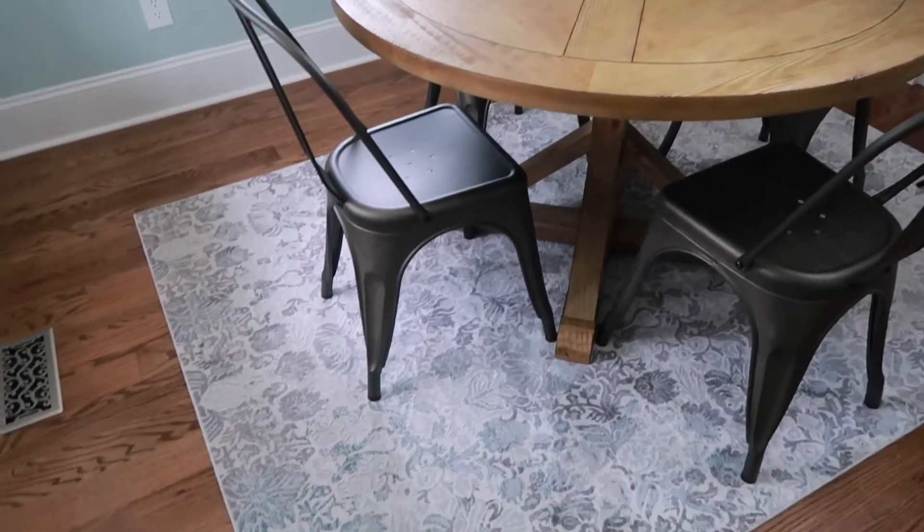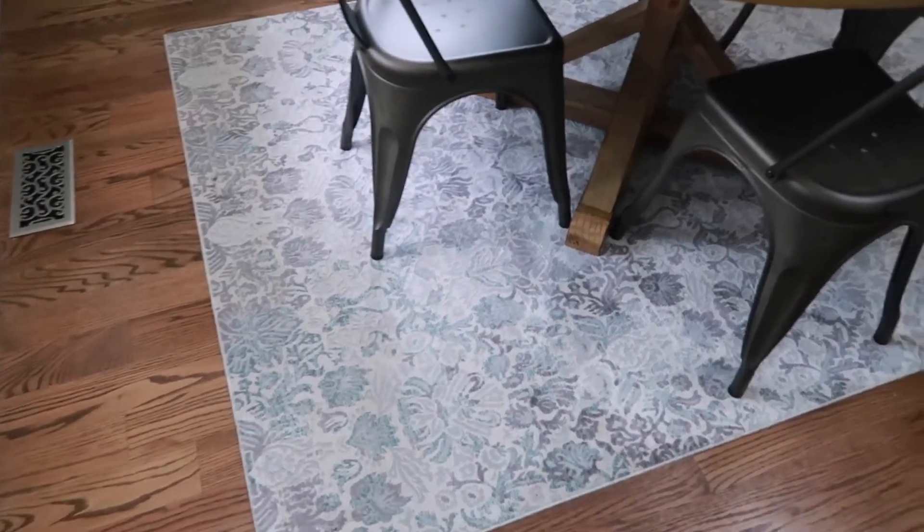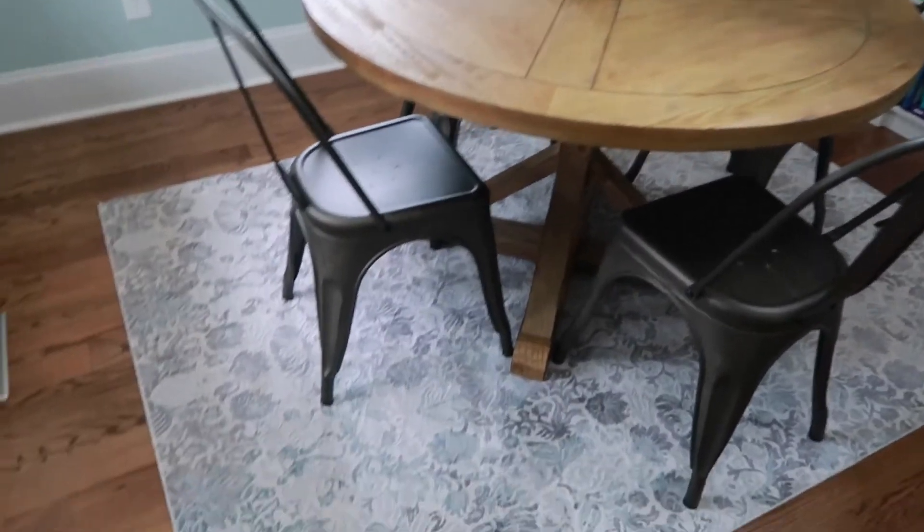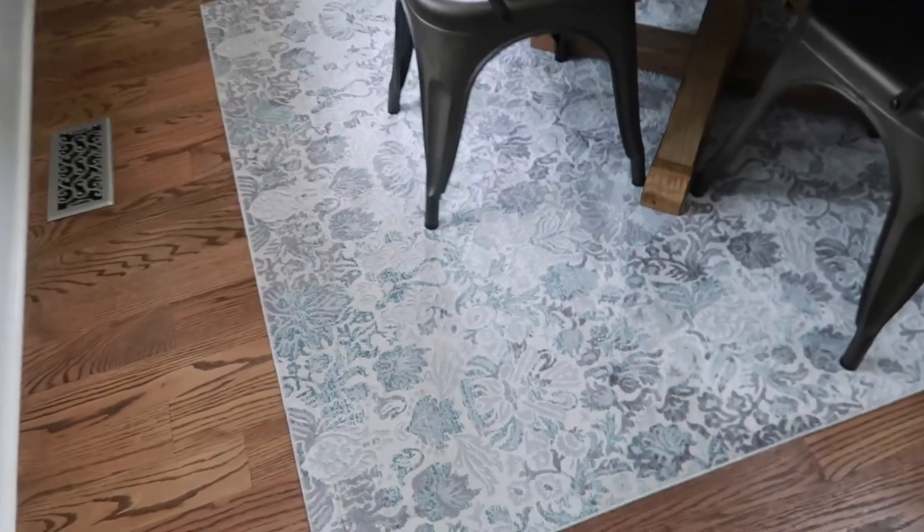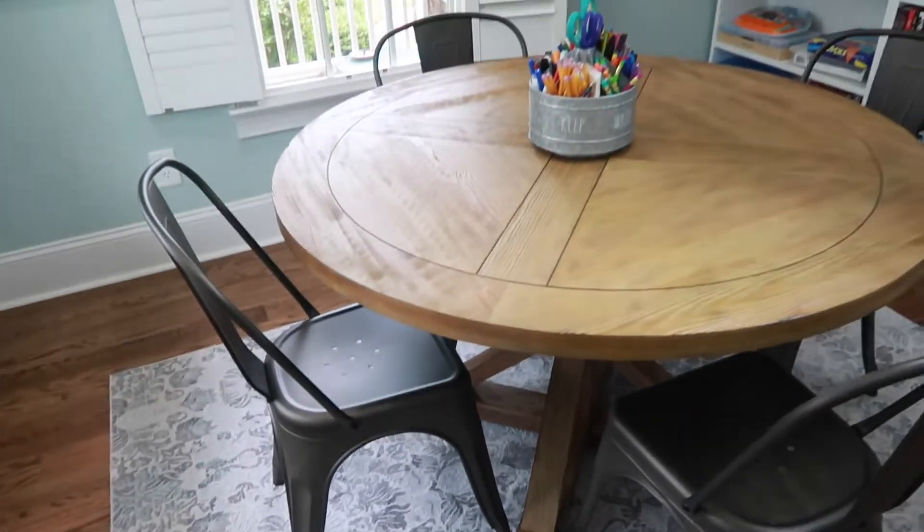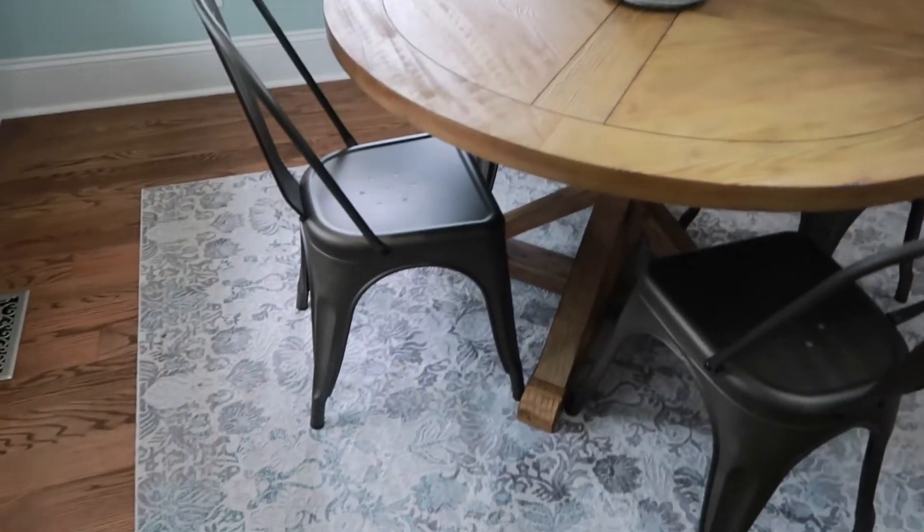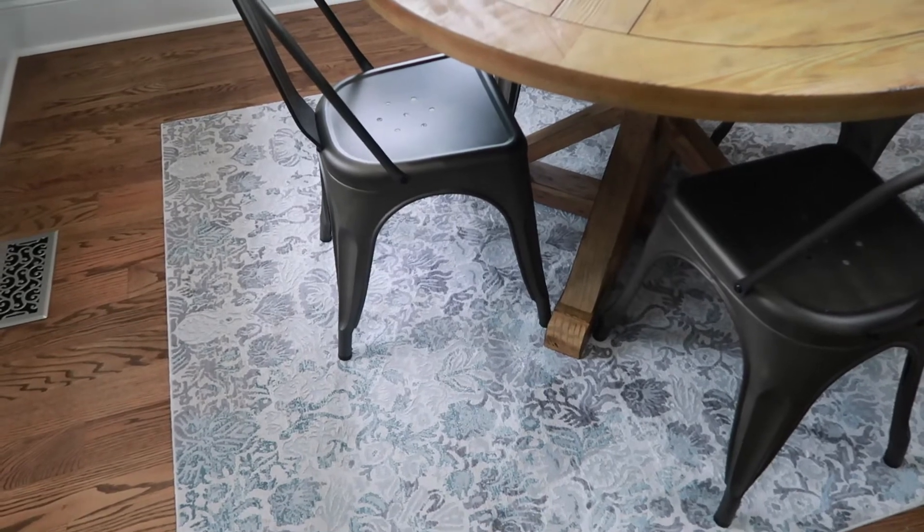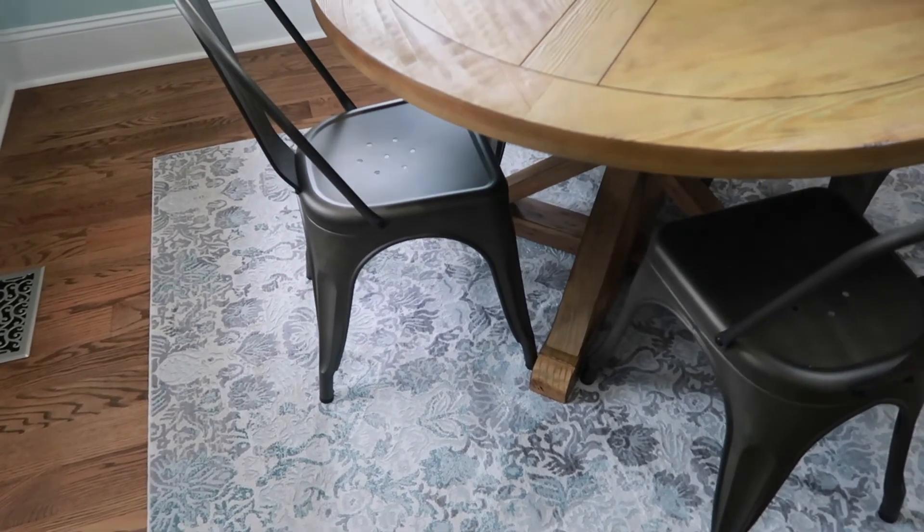The first thing that we have done is we've added this rug under our table. I think I mentioned in the previous homeschool room tour that we were probably going to do that. We really love it. We got this rug at Bed Bath & Beyond.